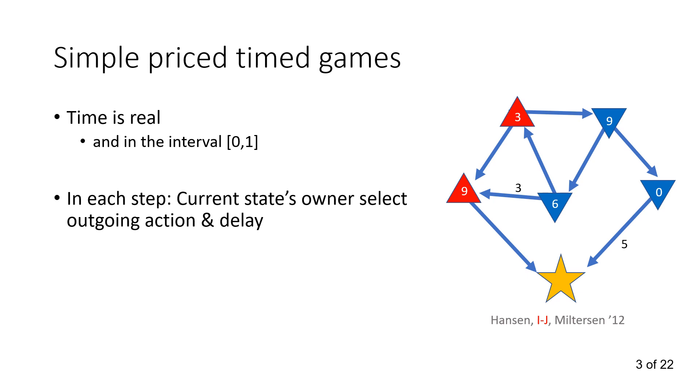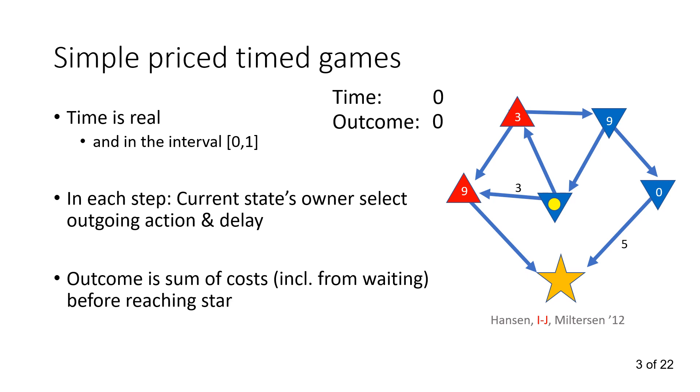The numbers on the states here mean how much it costs to wait every one time unit. So what happens is, in each state, the current state's owner selects an outgoing action and a delay. The delay must be such that the current time is in the interval 0 to 1. And the outcome is then the sum of costs, including from waiting, before reaching star. Let's say we start in the middle at time 0, the minimizer gets to choose. So he might choose one-third time unit. Because it costs 6 to wait here, it gives an outcome of 2, and he might move up here. Now the maximizer gets to choose, he might also choose one-third, getting us to time two-thirds. Here it costs only 3 to wait, so therefore the outcome is only 1 now, and we move right.